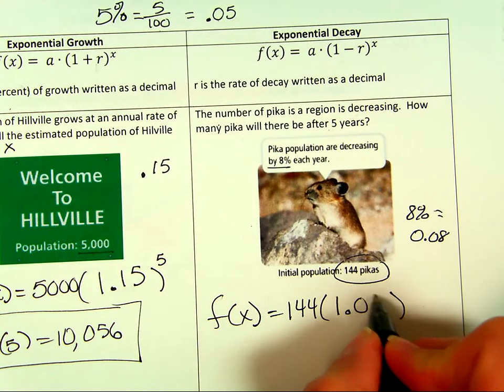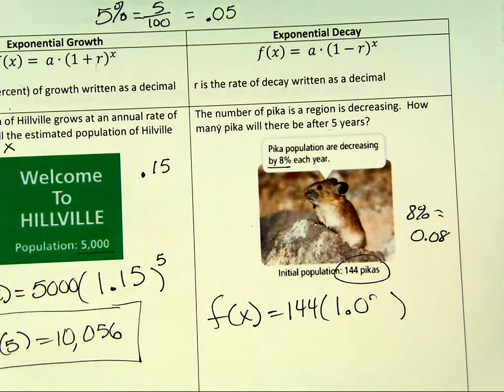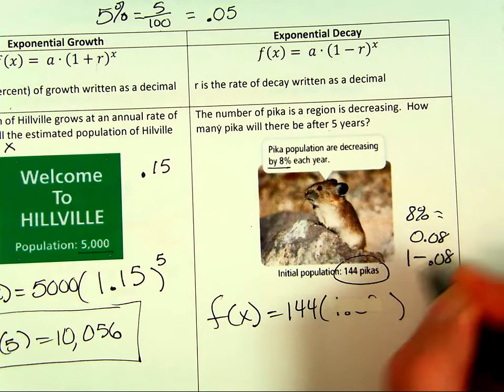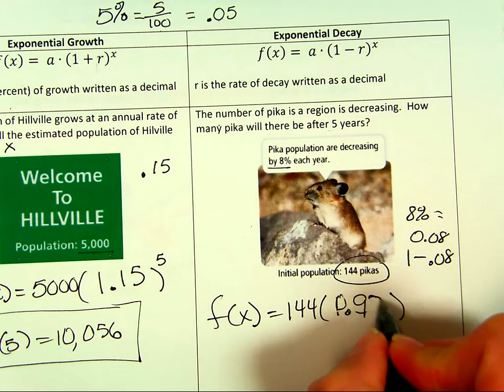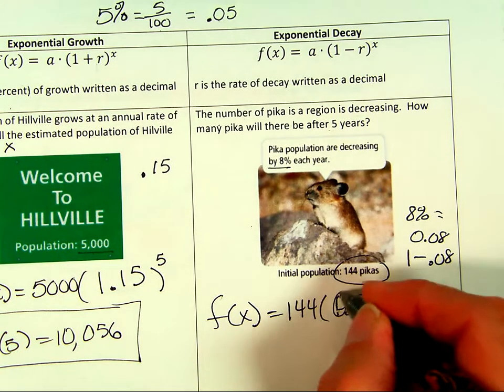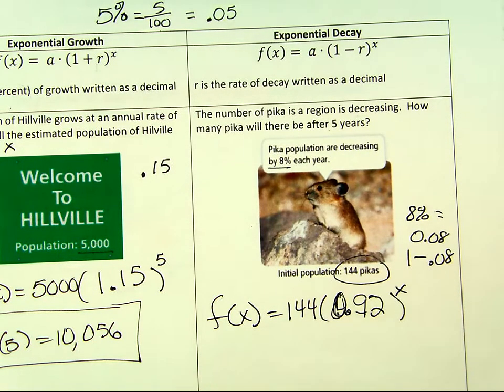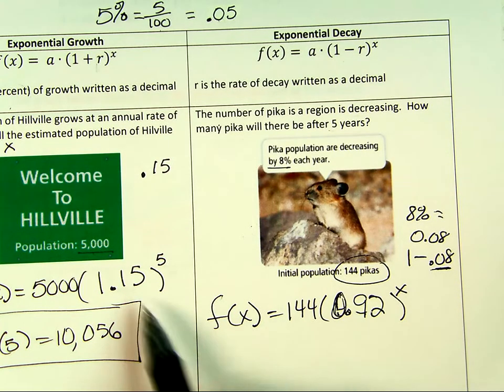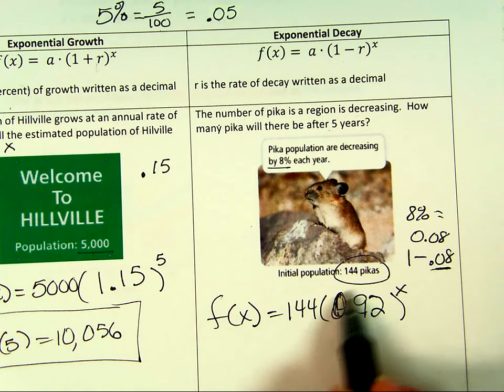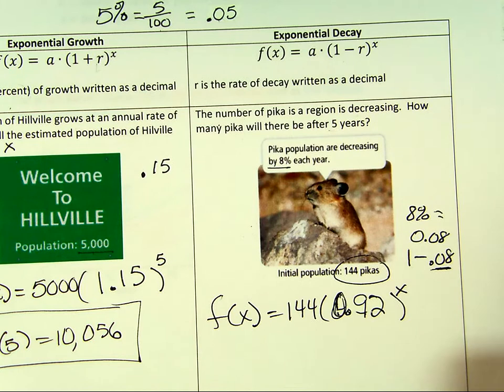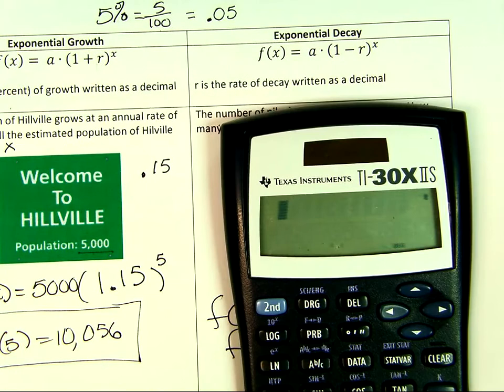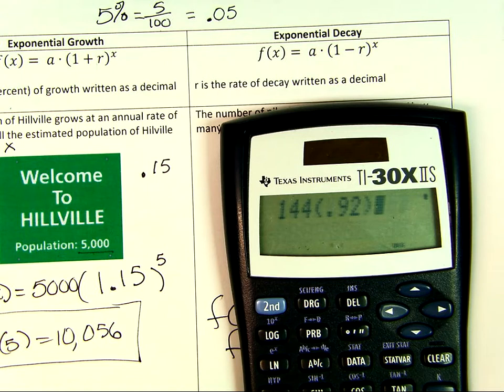I'm going to take my 1 plus the percent. 8% is equal to 0.08. I need to subtract, my apologies. It can't be 1.08 if it's decreasing. So I have to say 1 minus 0.08, which is going to be 0.92. That's going to be my rate. And then my time is five years. So we're going to put that in a calculator: 144 times 0.92 to the power of 5.